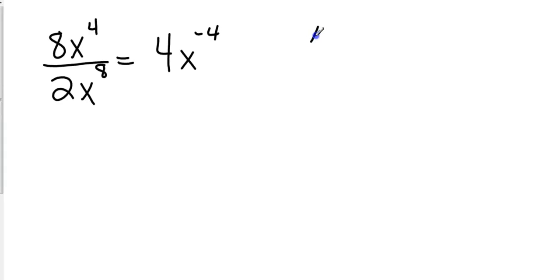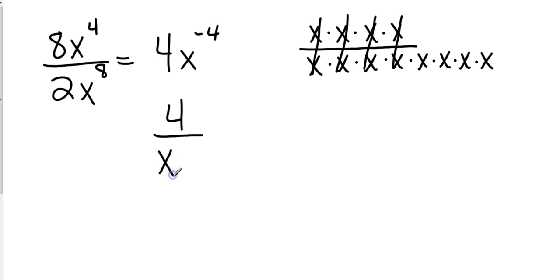So watch what happens. If I had x to the 4th on the top, which is what I had, and then on the bottom, that's x to the 8th. And so my rules of fractions would say I could cancel these 4. Now where is my x to the 4th? My x to the 4th is on the bottom. So the rule for negative exponents is I'm going to take the reciprocal, or I'm going to flip the exponent and the variable that it's connected to, and I'm going to flip it to the bottom. So I'm going to end up with 4 over x to the 4th.